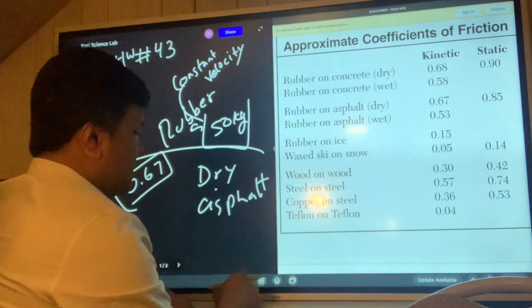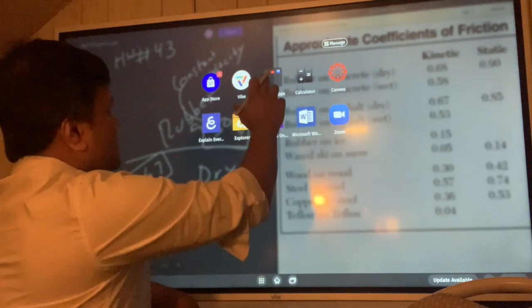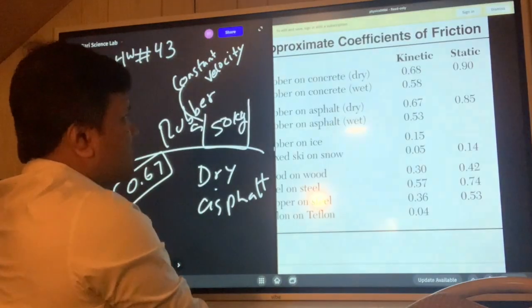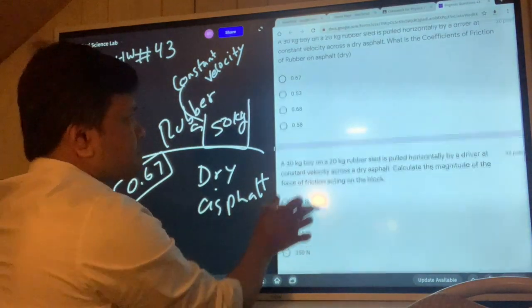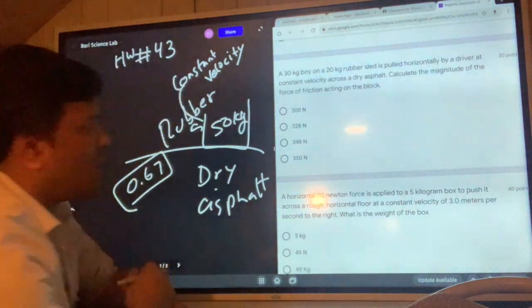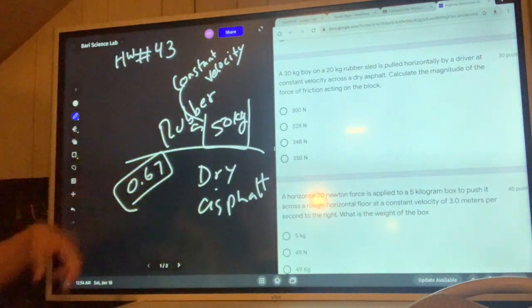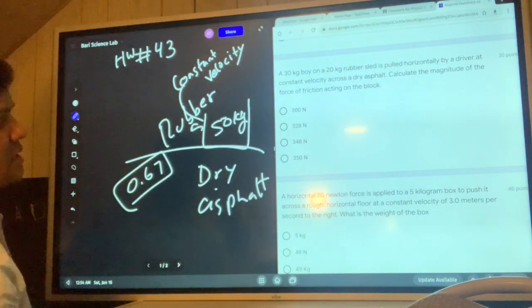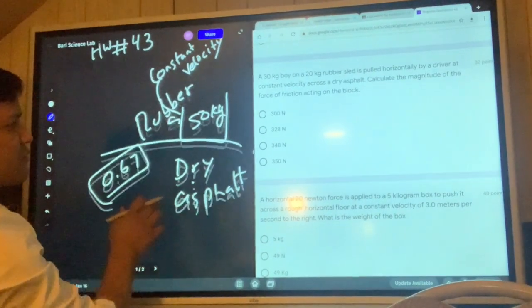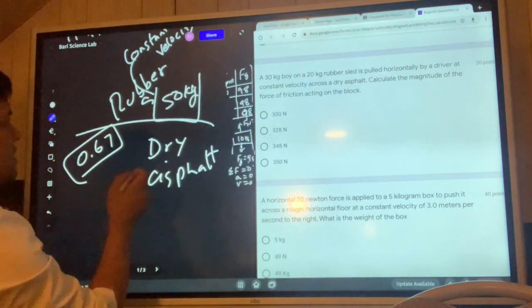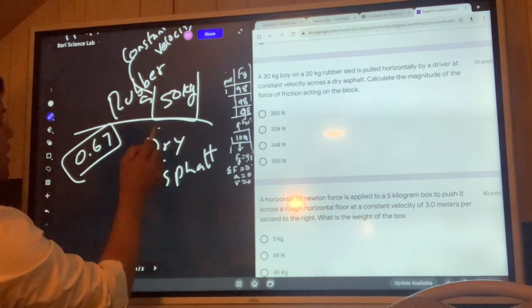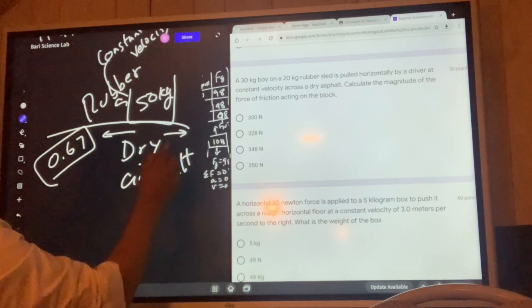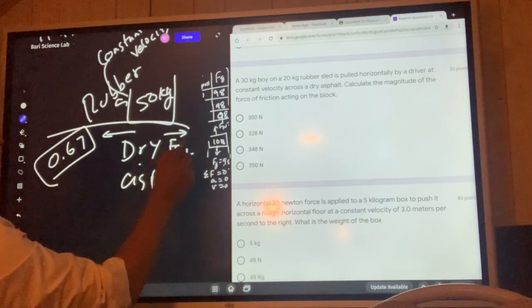Now let's check out what is number two. A 30 kilogram boy on a 20 kilogram rubber sled - this is the same problem. This time we have to find the magnitude of friction. The sled is moving this way, so friction is acting this way. This is what we need to find.